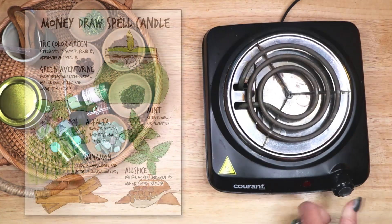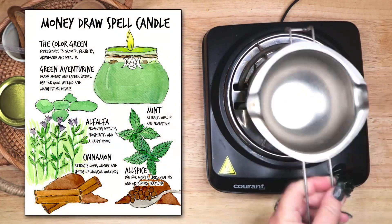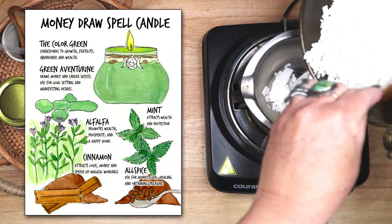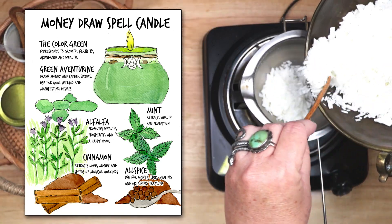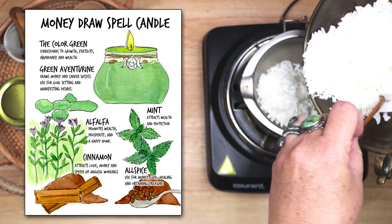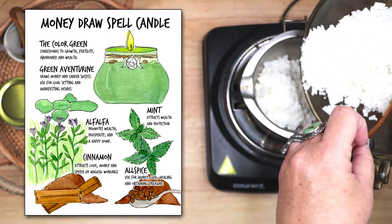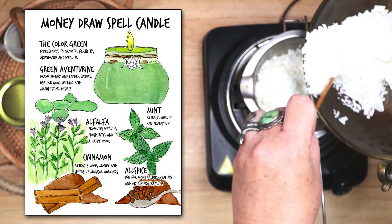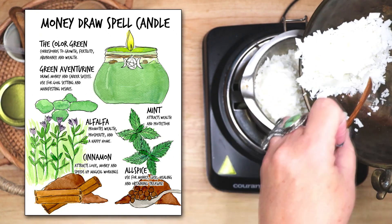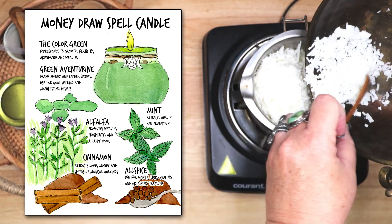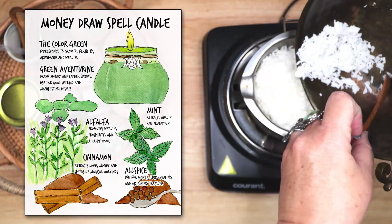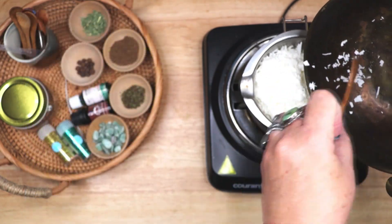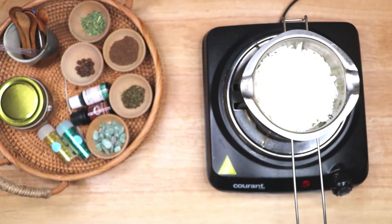I have created a book of shadows page for this particular spell candle recipe. If you would like to download a PDF of any and all of my grimoire pages, you can visit Magical Crafting on Patreon at the link below the video. My patrons can download recipes, book of shadows pages, artwork, and more, all provided as PDFs, and I continue to add new downloadable content as I do more projects on the channel.